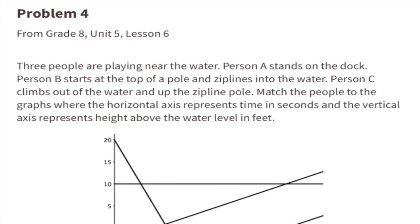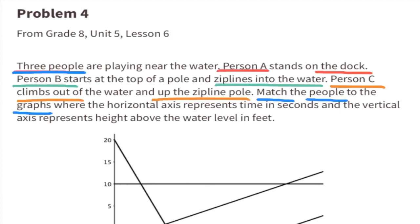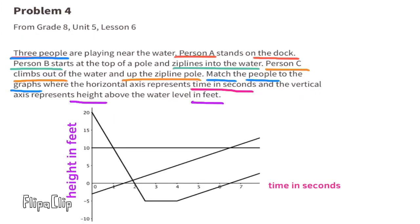Problem number 4 from 8th grade Unit 5 Lesson 6: Three people are playing near the water. Person A stands on the dock. Person B stands on the top of a pole and ziplines into the water. Person C climbs out of the water and up the zipline pole. Match the people to the graphs, where the horizontal axis represents time in seconds and the vertical axis represents height above the water level in feet.